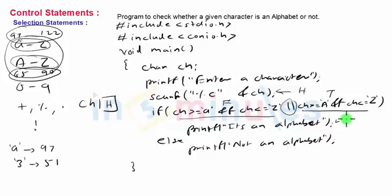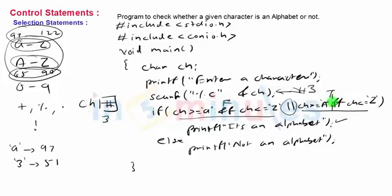Since the uppercase condition is true, the message 'it's an alphabet' is shown and the else part is skipped. Now suppose the input character was '3' — ch holds '3'. The check for 'a' to 'z' is false, and the check for 'A' to 'Z' is also false. So the overall condition is false, the if block is skipped, and the else part prints 'not an alphabet'.